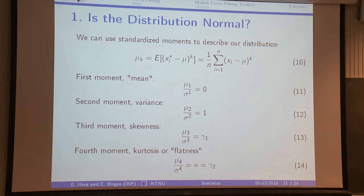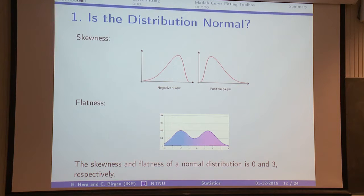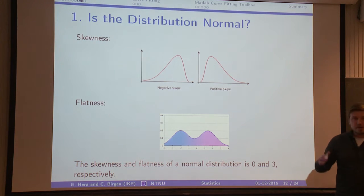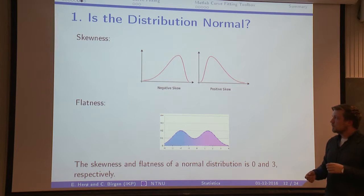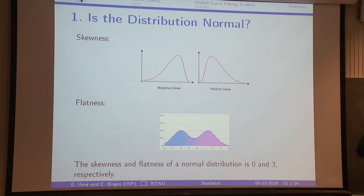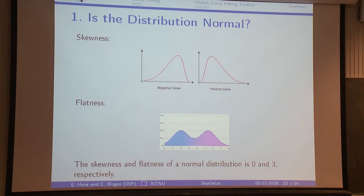For a normal distribution, the skewness is zero and the flatness is three. If you find your skewness to be negative, it means you have much of your data skewed to one side of the mean. And with the flatness, you could have a bi-tipped shape when you have two peaks in your data, which is a bad sign. But if your flatness is almost three and you're assuming a normal distribution, then it's not so bad and you might just keep going.